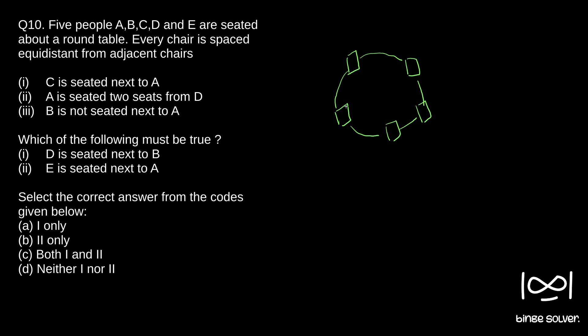So five tables are there. The first information is C is seated next to A. So randomly we assign, let's say this is A. So C could be either here or here. Both possibilities are there.